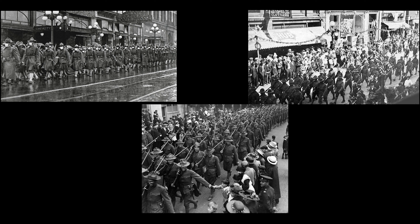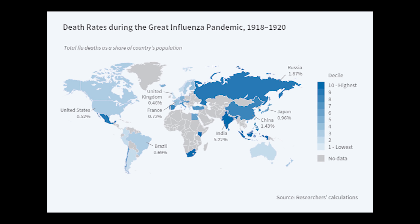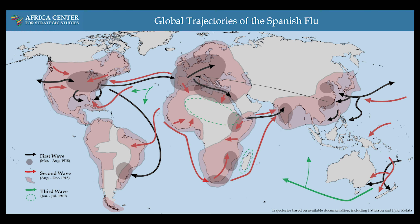The first wave of the flu lasted through the first quarter of 1918. It was relatively mild — mortality rates were not much above normal. In the United States, 75,000 flu-related deaths were reported in the first six months of 1918. The first wave brought to Europe by American soldiers resulted in significant disruption of military operations: 75% of French troops became sick, 50% of British troops, and almost a million Germans.